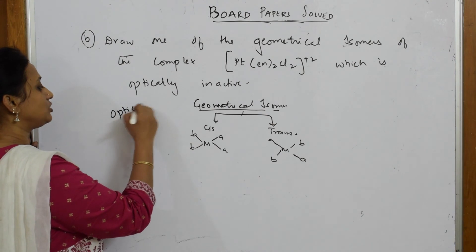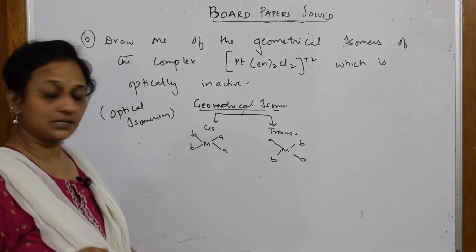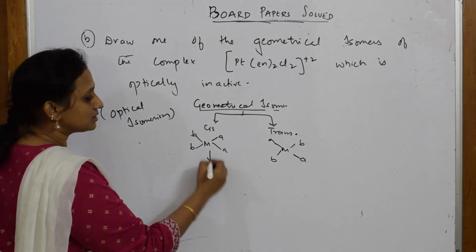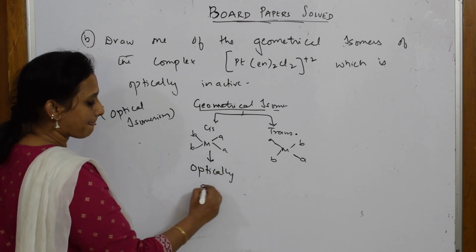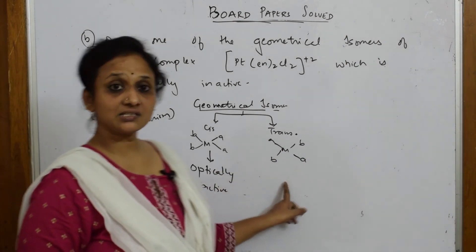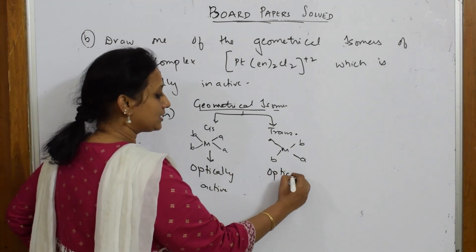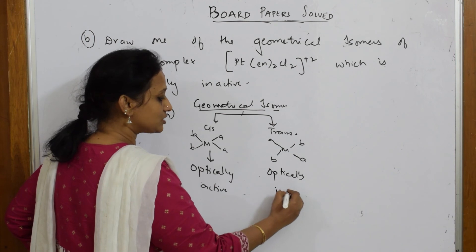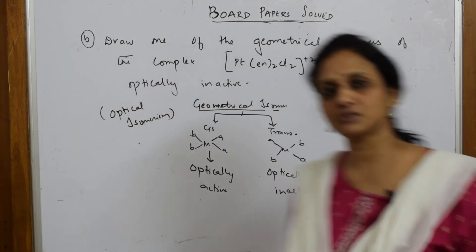Always remember: cis isomers are optically active, trans are always inactive. They asked me to write the trans isomer. Let's draw.